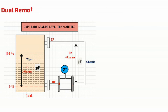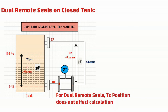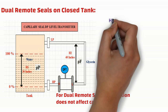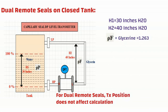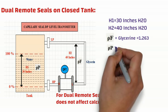As you can see from the diagram, this is an example of a dual remote diaphragm seal on a closed tank. It is important to understand that the transmitter position does not affect the calculation when dual remote seals are used — it does not matter whether the transmitter is below or above the bottom tap. The LRV and URV are the same for all three conditions. In this example, the distance between the bottom tap and maximum level height is 30 inches, and the elevation distance between the lower seal tap and upper seal tap is 40 inches. The remote seal is filled with glycerin with a specific gravity of 1.263, and the process fluid is water with a specific gravity of 1.